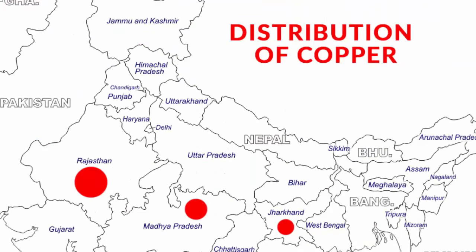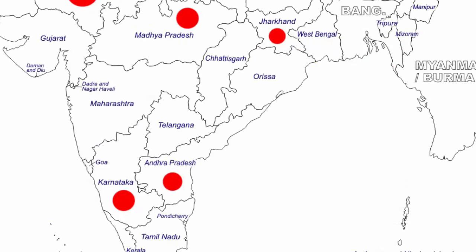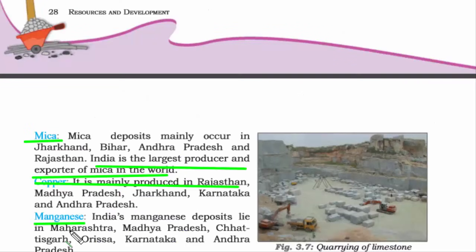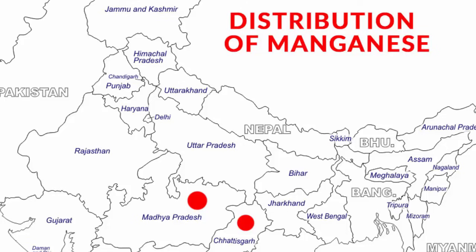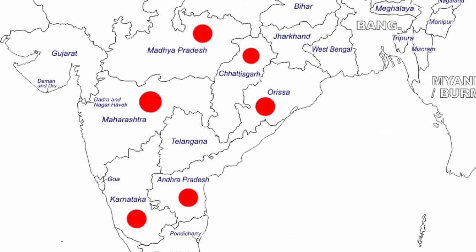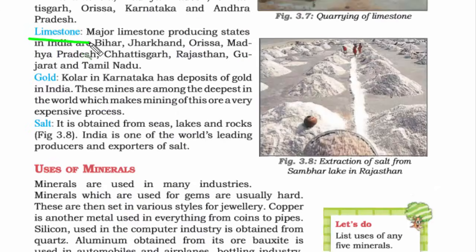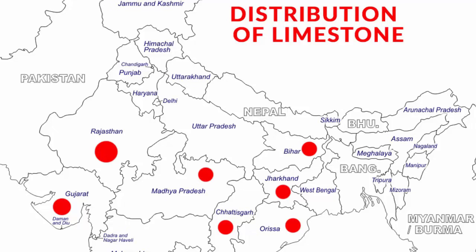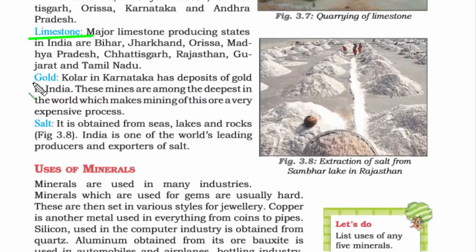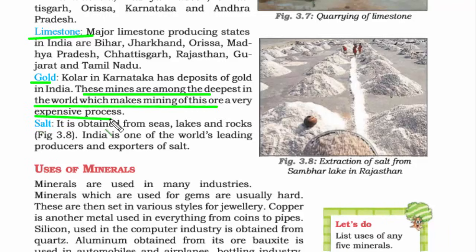Copper is produced in Rajasthan, Madhya Pradesh, Jharkhand, Karnataka, and Andhra Pradesh. Manganese is found in Maharashtra, Madhya Pradesh, Chhattisgarh, Orissa, Karnataka, and Andhra Pradesh. Limestone distribution is also shown on the map. For gold, India has one major mine in Kolar, Karnataka, which is also the deepest in the world, making the mining of this ore a very expensive process.